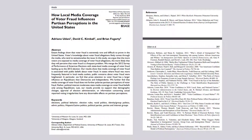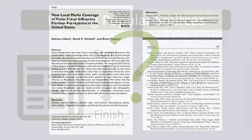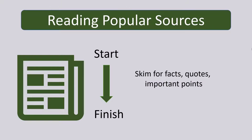They may also contain some jargon or terms used by experts in the field that you might not understand. If you don't know the meaning of a word, it's okay to look it up. If you're not sure if what you're looking at is a scholarly article, ask a librarian.